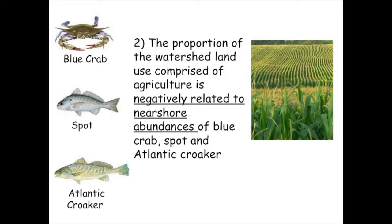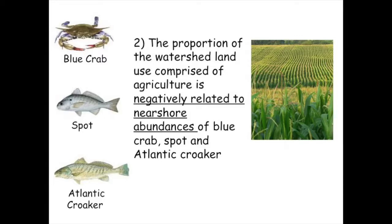This sort of effect has been seen before in some experimental work and sampling that Tuck Hines and Greg Ruiz did quite a few years ago. Essentially, the greater water depth allows access to predators. The second take-home message — besides the fact that different species like different kinds of shorelines — is that the proportion of the watershed land use comprised of agriculture is negatively related to near-shore abundances of several important species: blue crab, spot, and croaker.